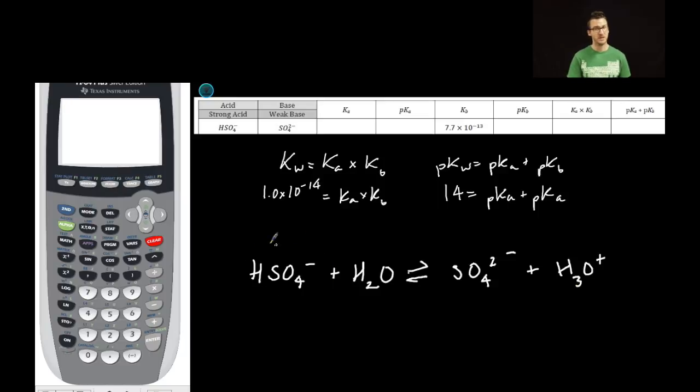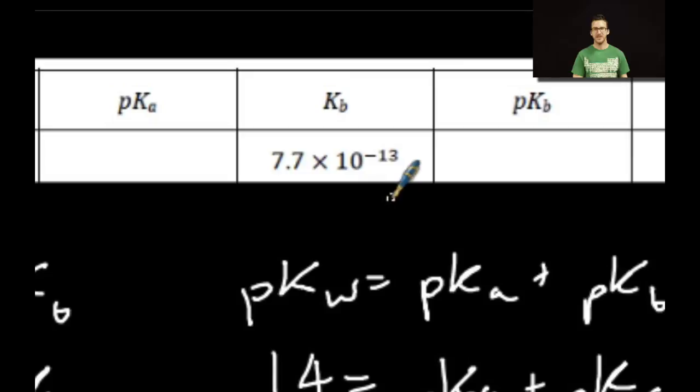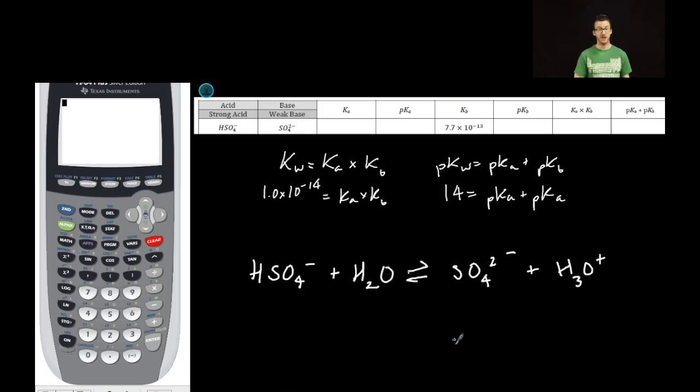Recognize that this is our acid because it's going to be donating hydrogen ions as our conjugate base because it's what's left over after the hydrogen ion has been donated. Now, let's take a look and see what information I'm provided with in my data table. All I'm given is the Kb of my conjugate base. I need to find the Ka of my acid, the pKa of my acid, and the pKb of my conjugate base.